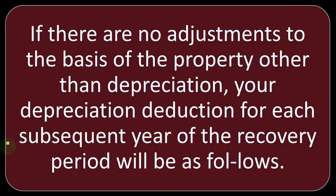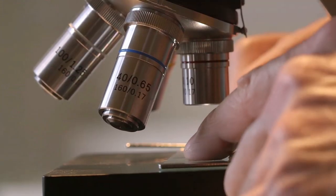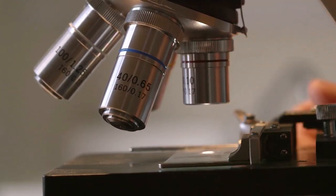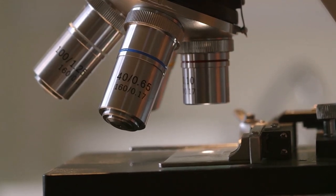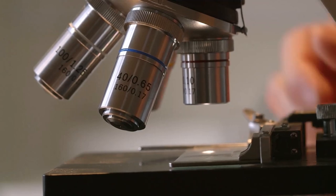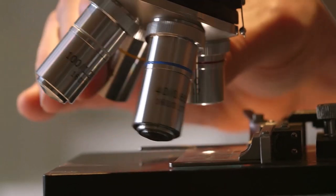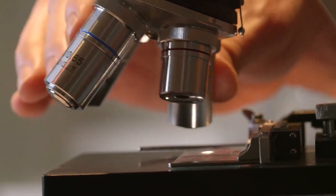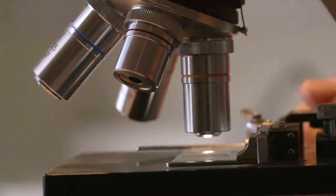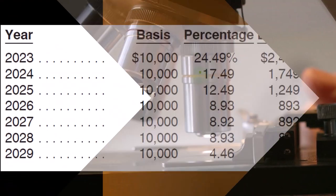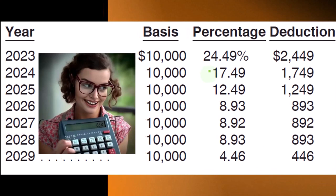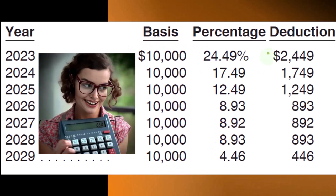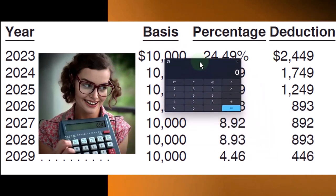So if there are no adjustments to the basis of the property other than depreciation, your depreciation deduction for each subsequent year of the recovery period will be as follows. So now we've got our table — $10,000 property — and notice how easy it is. They just give us these percentages. You might ask how they got these percentages. Well, you could do a double declining calculation with a mid-year convention, but it's a little messy. These tables are quite easy.